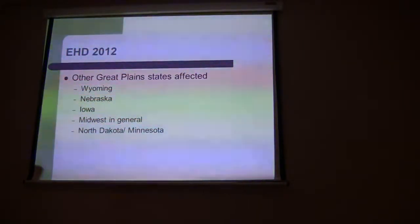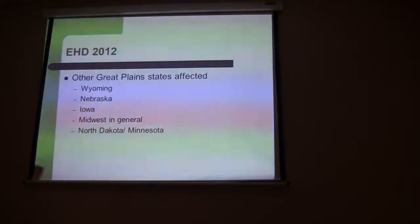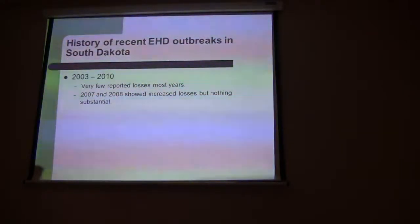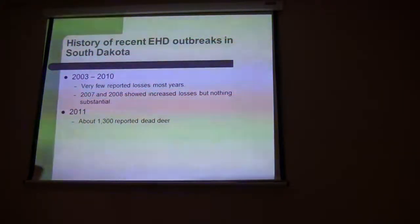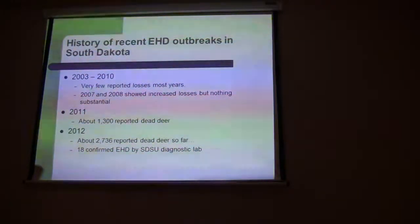Just a note on North Dakota: last year they got hit really hard. This year they've had one report so far, so they seem to be escaping it. Same with Minnesota — as of earlier this week, they haven't had a report yet, so they're lucky. Looking back the last 10 years of South Dakota history, we've had very few reports. We saw a few more come in around 2007 and 2008. Now, 2011 was a pretty significant year for us — as I talked about last year, we had about 1,300 deer reported lost to EHD.